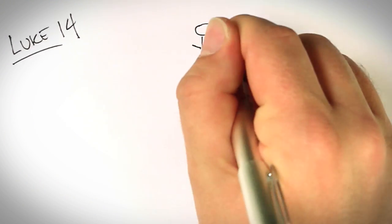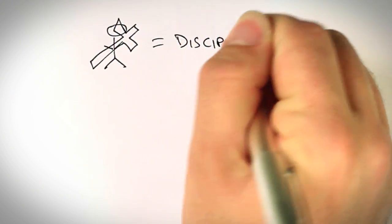Jesus told this parable in Luke 14: Anyone who does not carry his own cross and follow me cannot be my disciple.